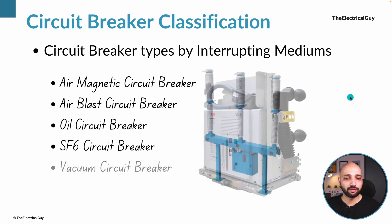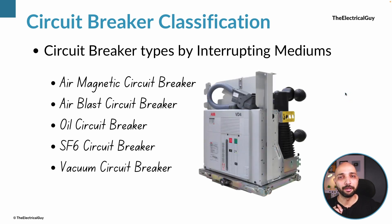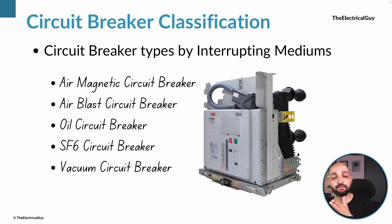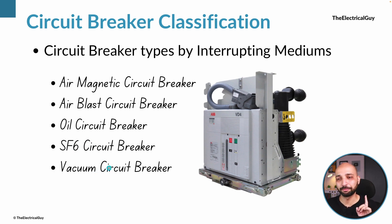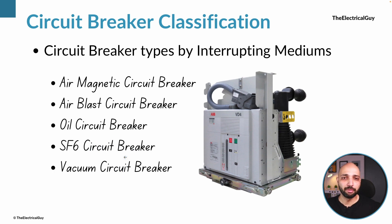The next technology available is the vacuum circuit breaker. Vacuum is superior to SF6, but its limitation is that it is only available up to 36 kV — though a few manufacturers have developed 145 kV vacuum breakers. To summarize: above 36 kV it is the SF6 circuit breaker, and below 36 kV it is the vacuum circuit breaker. All other types of circuit breaker based on interrupting medium — air magnetic, air blast, oil — are obsolete and nobody uses them today.